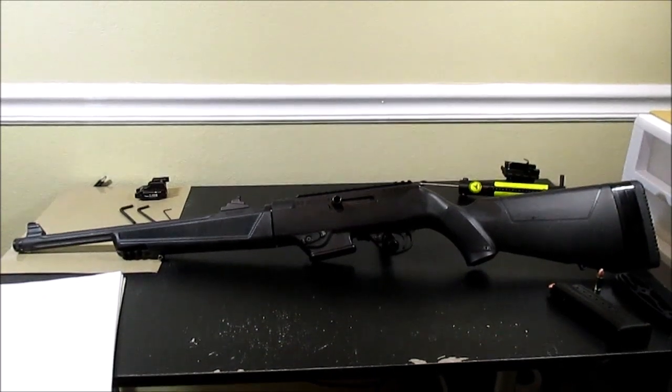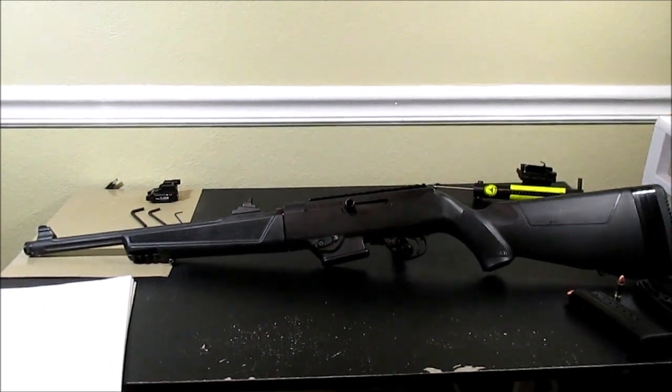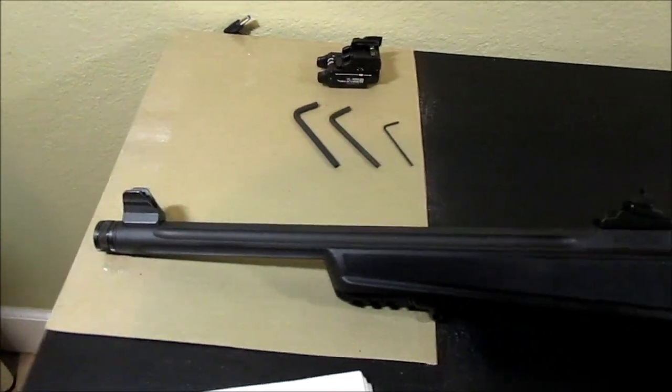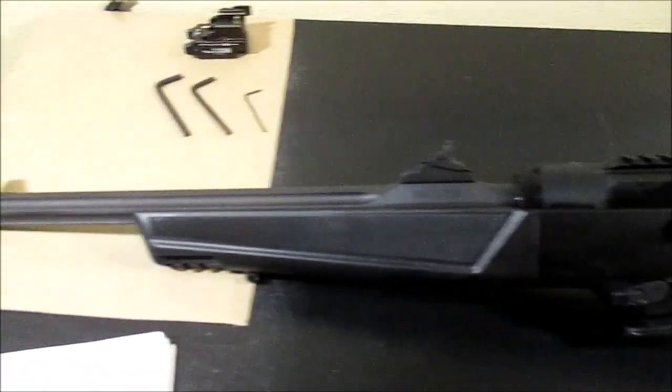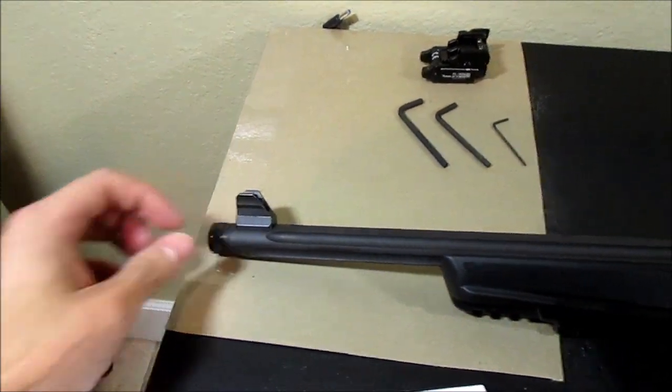So what I have here in front of me is a Ruger PC Carbine in 9mm. Specifically this one is the 19100 model, which means it has a threaded barrel with a thread protector on right now.